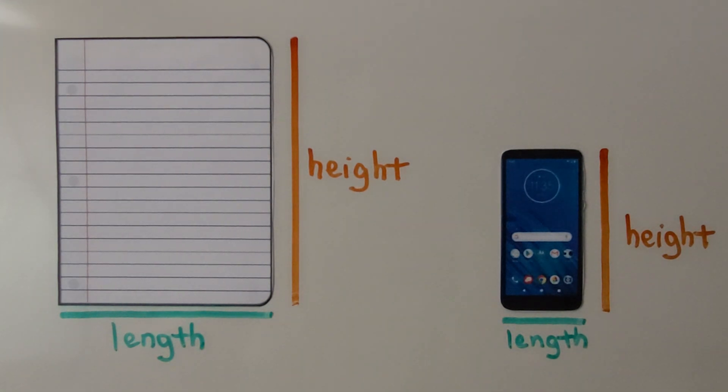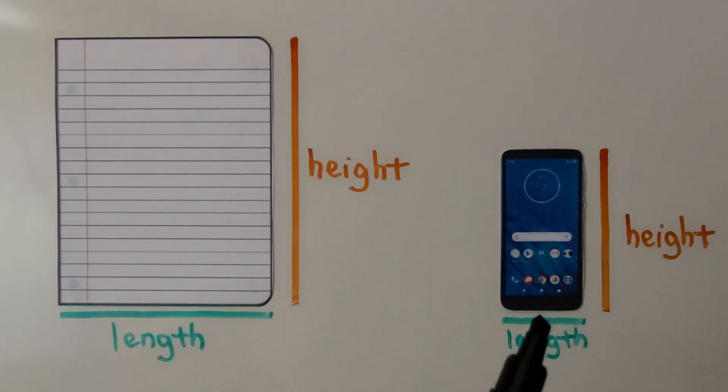You can try holding a piece of paper in one hand and a phone in the other hand to see which one you think is heavier.